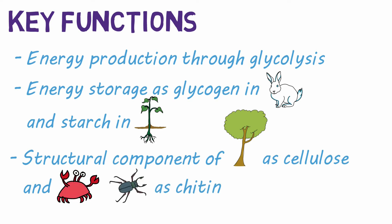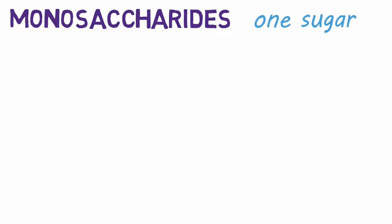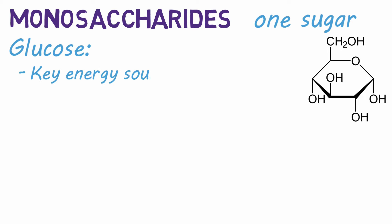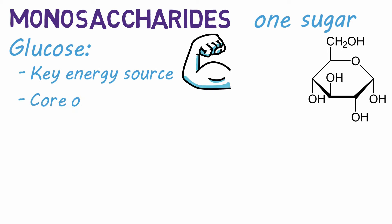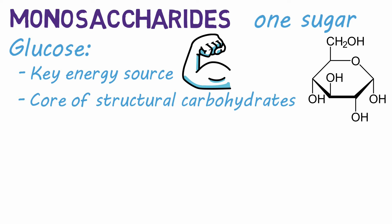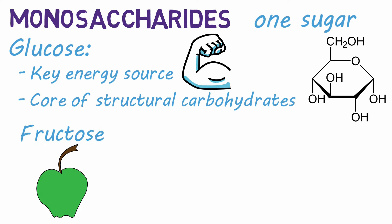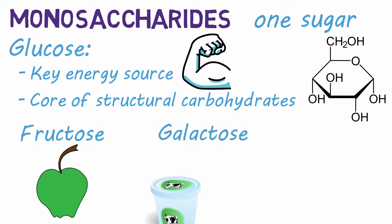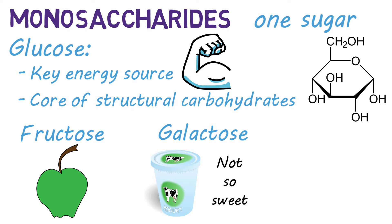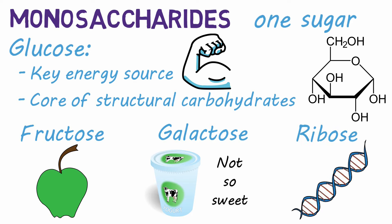The simplest form of carbohydrates are called monosaccharides. Mono means one and saccharide means sugar, so a monosaccharide is a single carbohydrate molecule. Examples include glucose, an important simple sugar that is a key energy source in living organisms and the core of many structural carbohydrates. Fructose is the sugar found in many fruits. Galactose is a sugar found in yogurt and is less sweet than fructose and glucose, and ribose is a monosaccharide that helps form DNA.